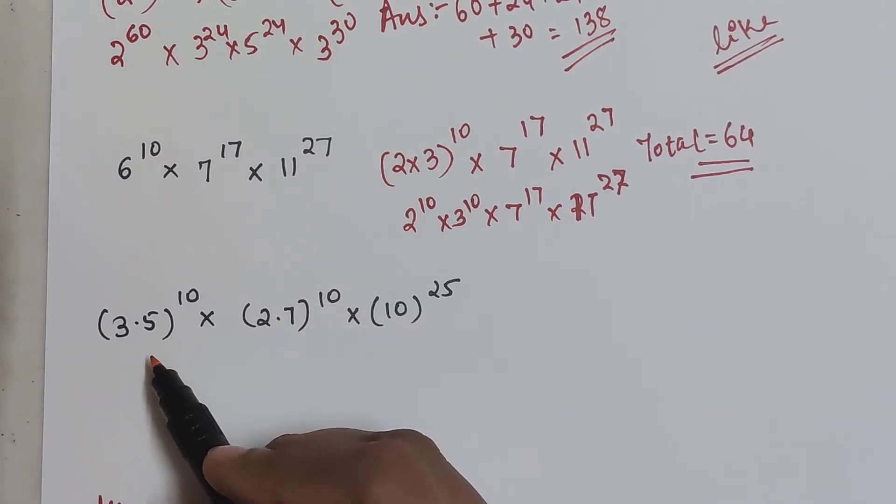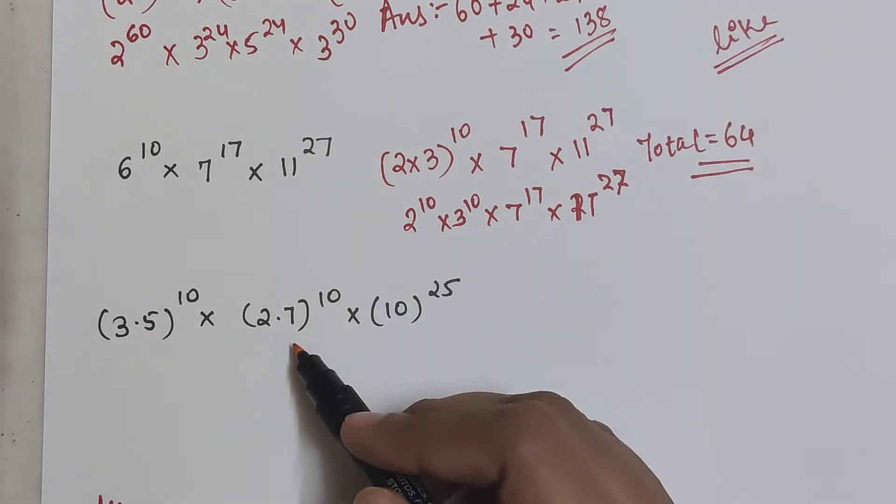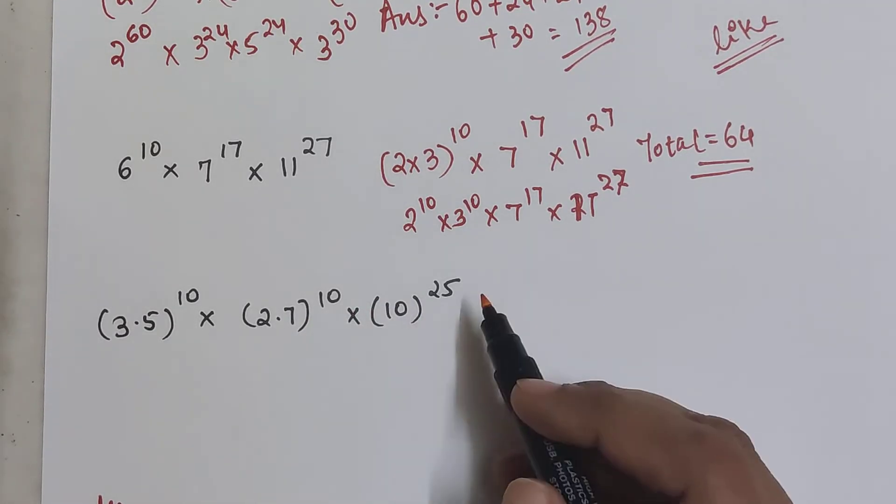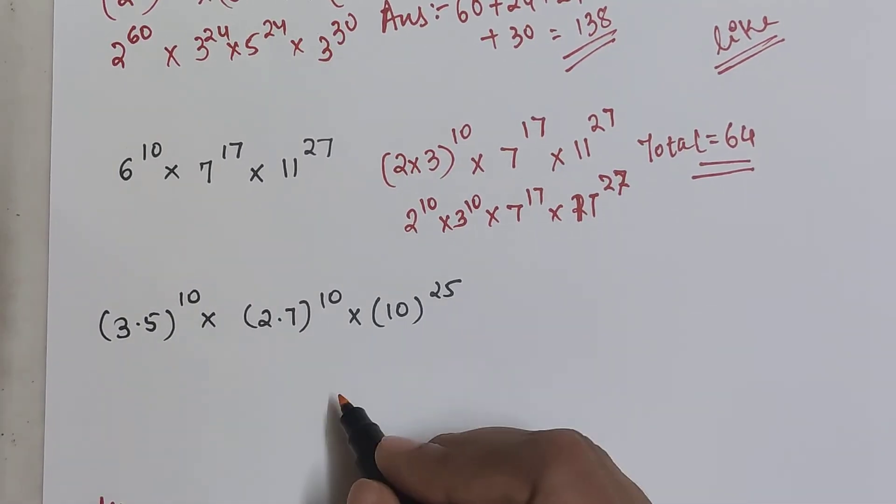So now please understand, here we have 3.5 the whole raised to 10, and here we have 2.7 the whole raised to 10. Similarly, here we have 10 raised to 25. So now here what we can write this as nothing but, let's write them in fraction form.